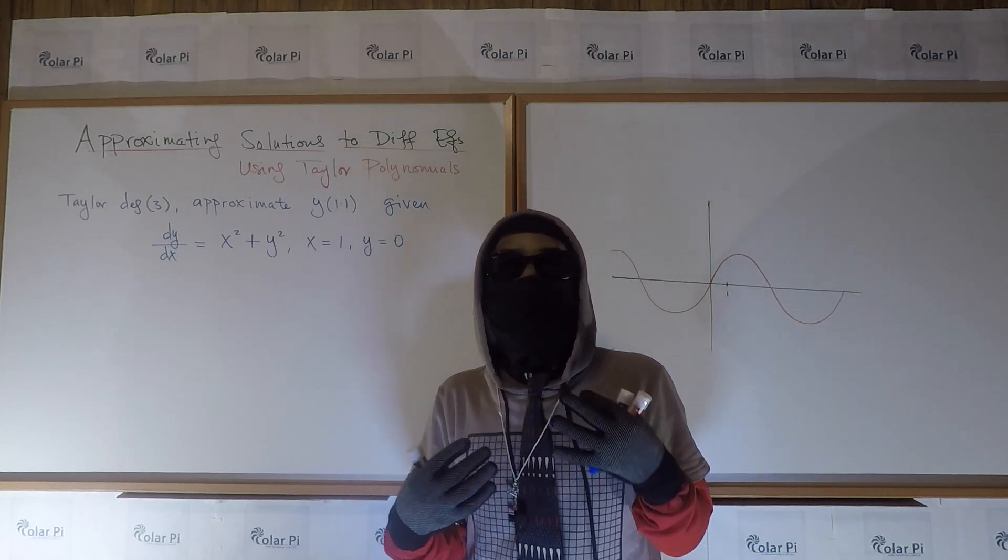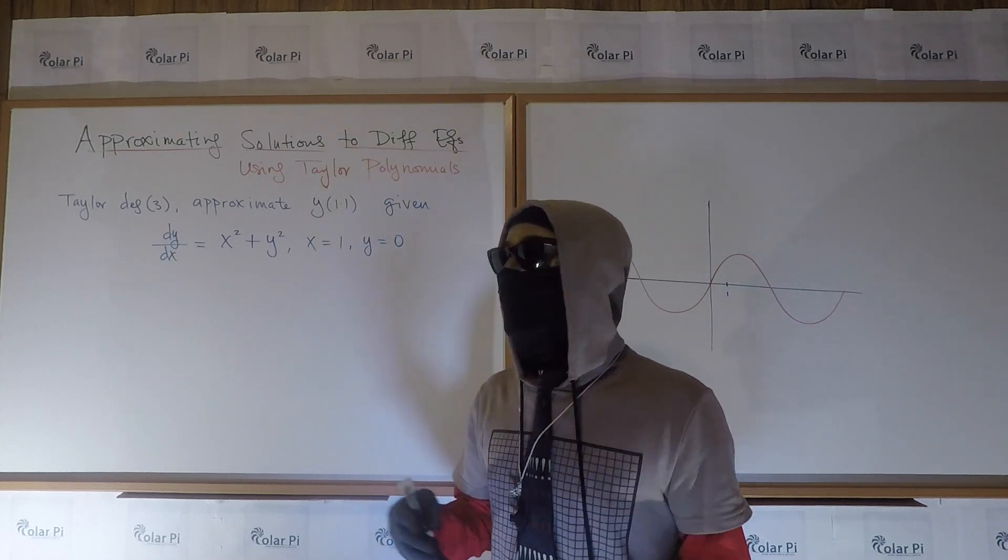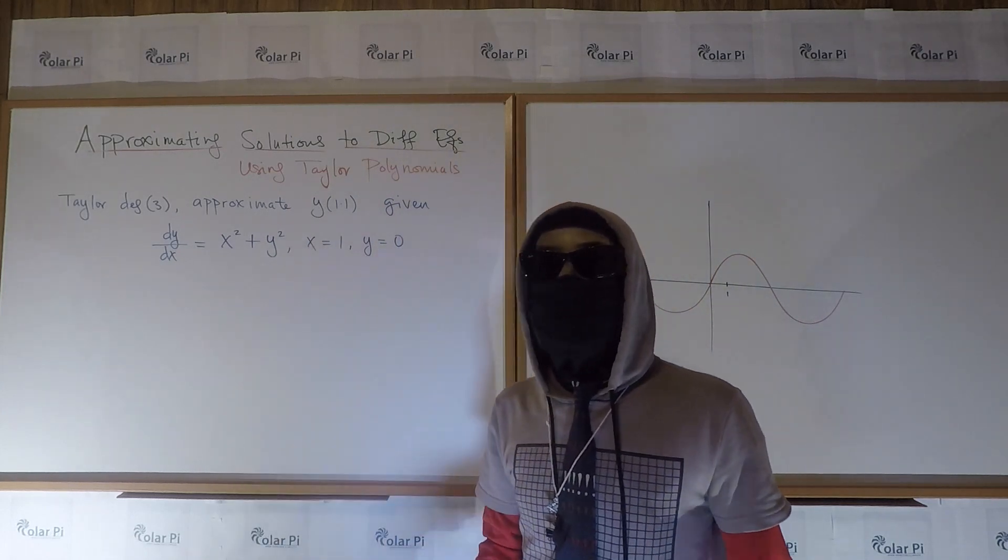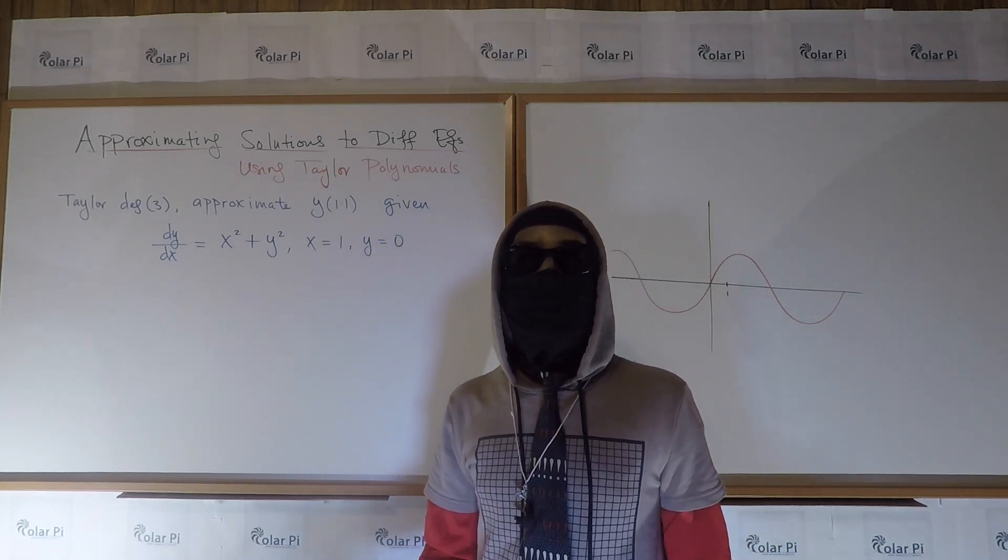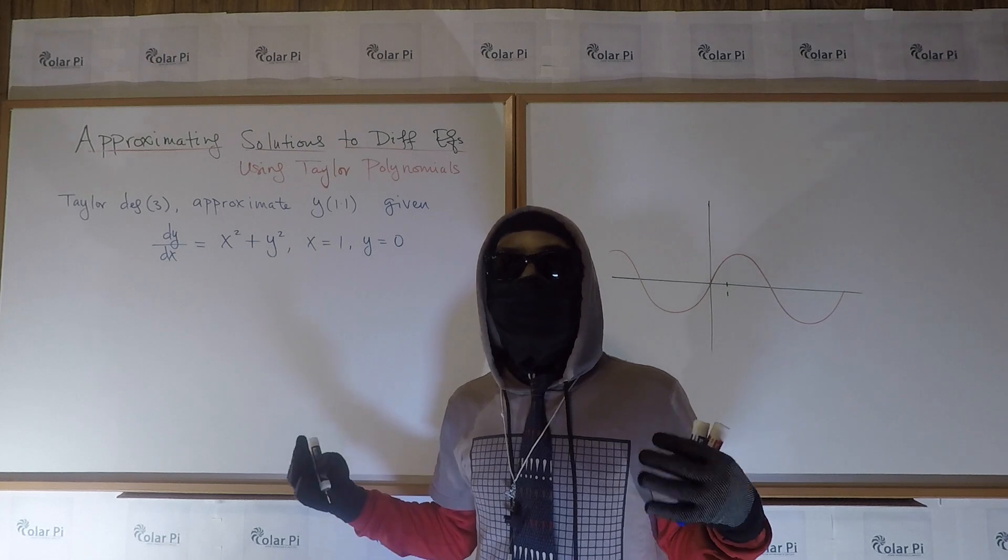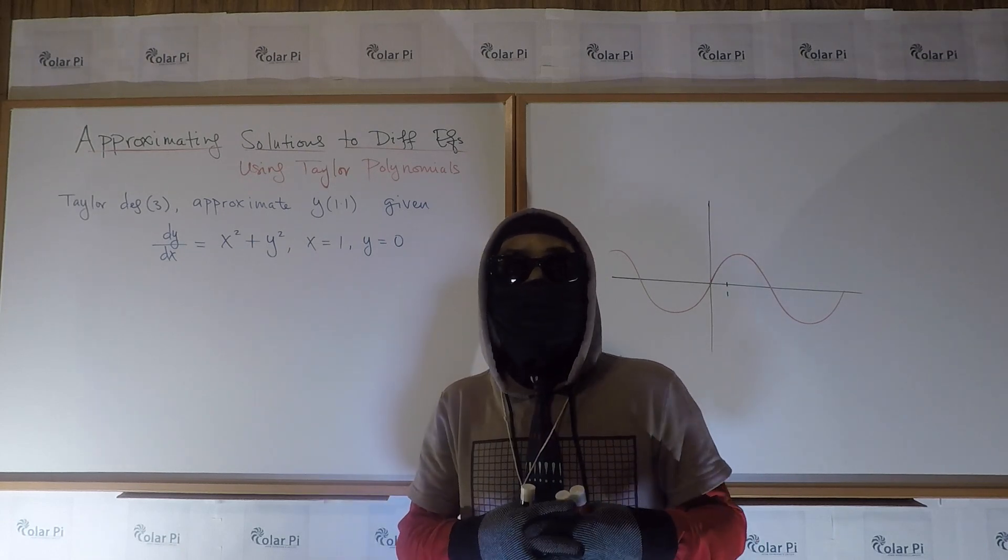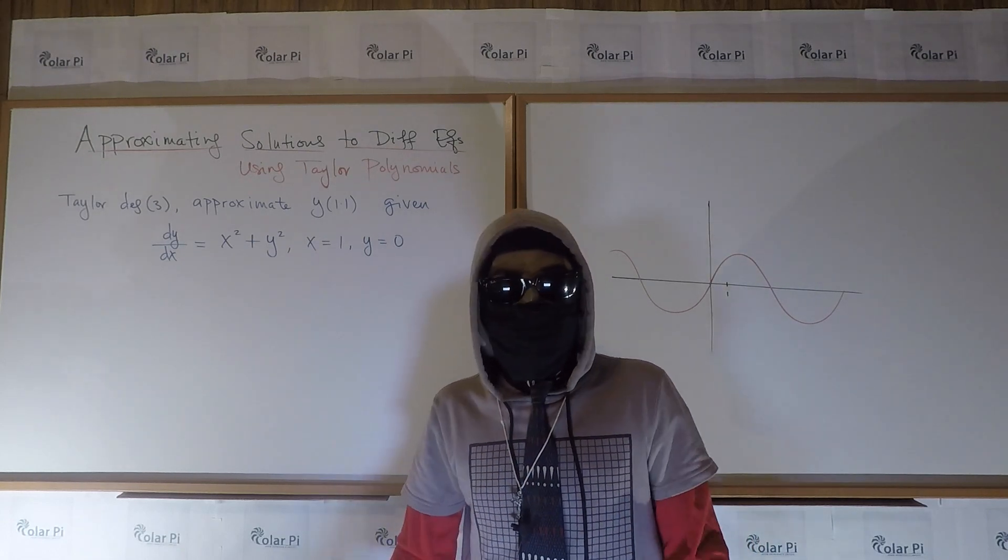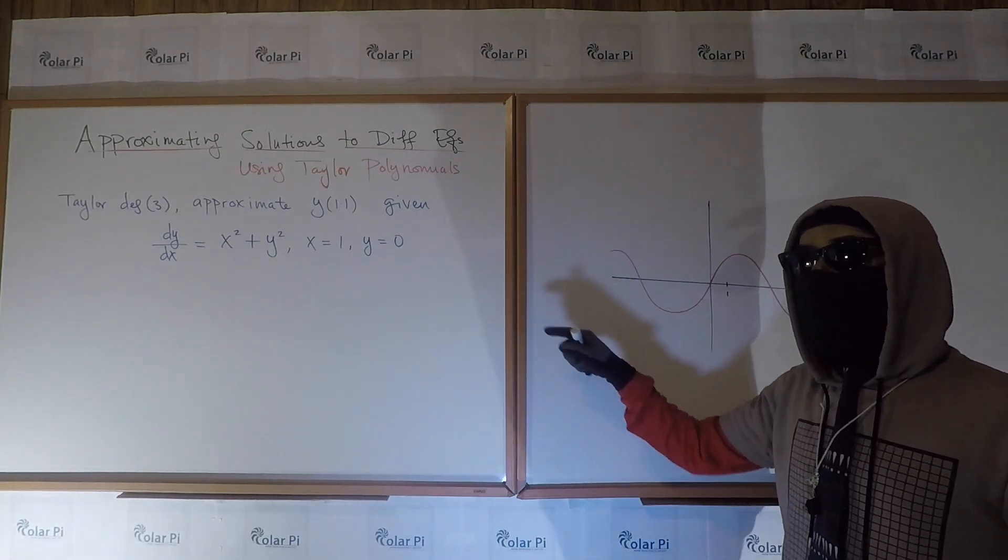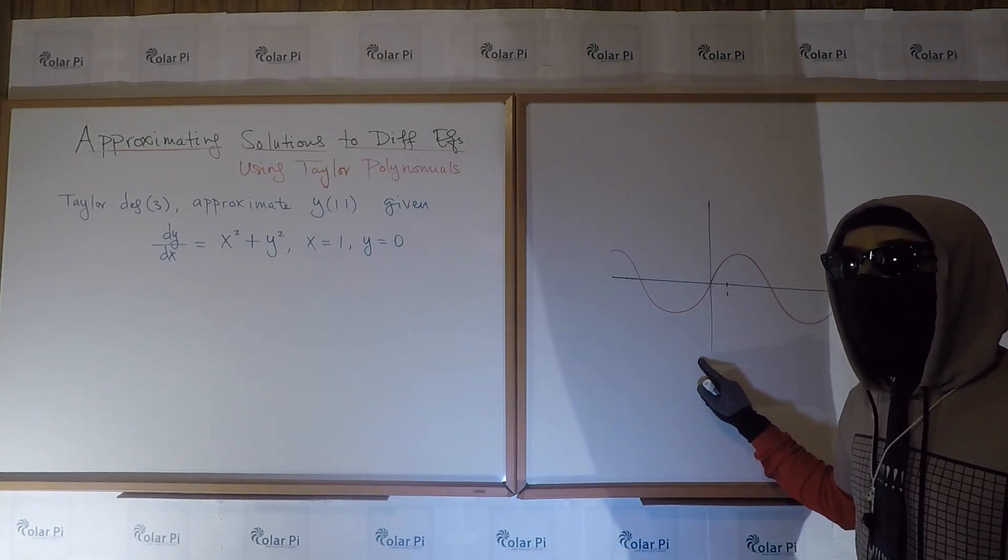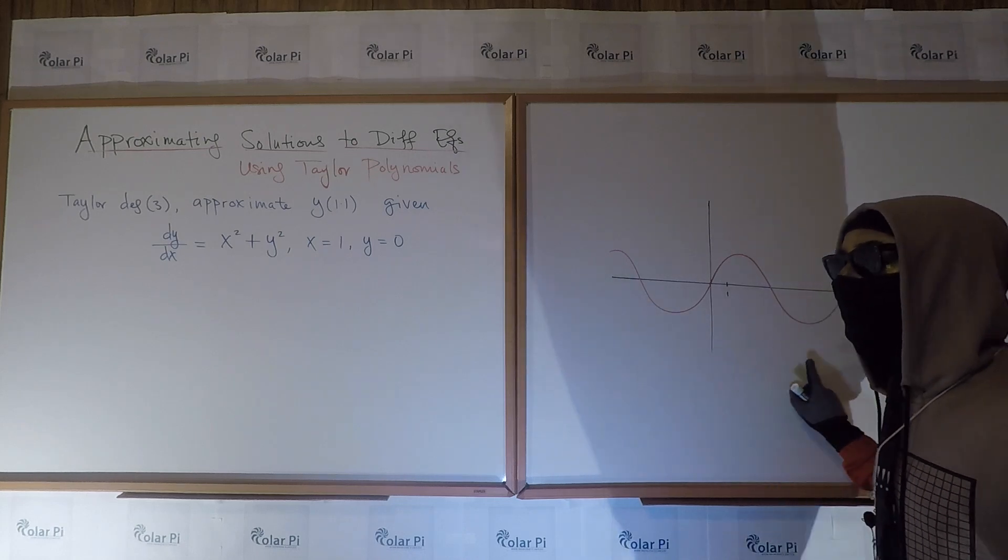Now, the reason why you'd want to do this is because you can't solve the differential equation, so you estimate y values given an initial condition. The other way to do this, to estimate, is to use Euler's method, which I'll dedicate another video to. But let's discuss the difference, before we get started, between Euler's method and the Taylor polynomial method.